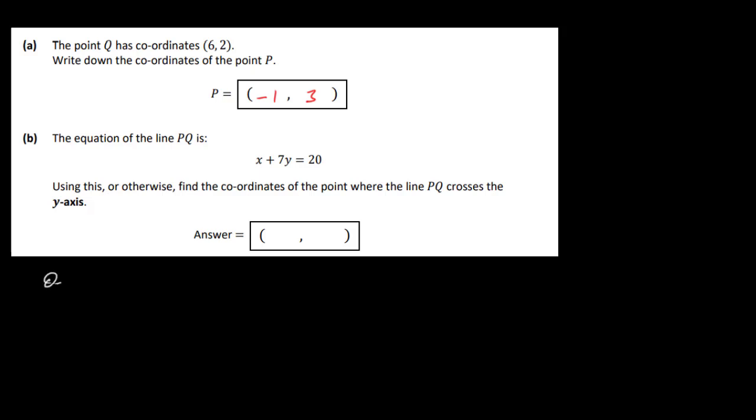So we know that on the y-axis, x equals 0. If we take x plus 7y equals 20, all we've got to do is put in 0 for x and see what we get. So we get 0 plus 7y equals 20, or just 7y equals 20. Now we divide by 7, so we have y equals 20 over 7. So the coordinates of our y-intercept are 0 and 20 over 7 for the y part of the coordinate.